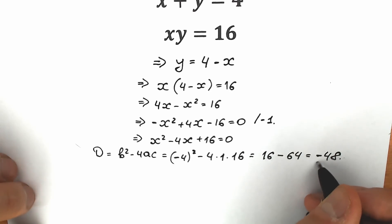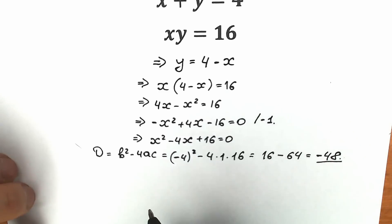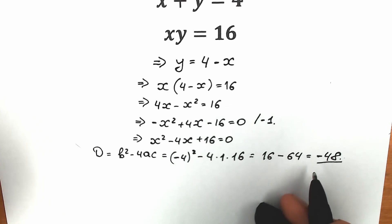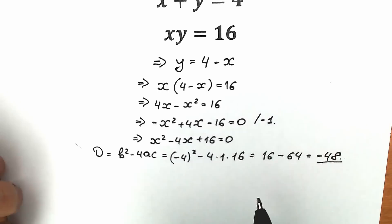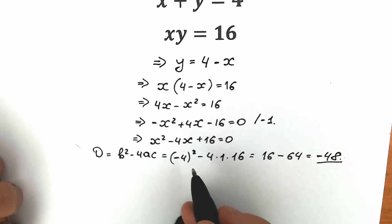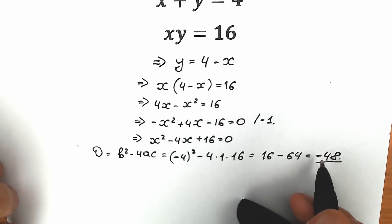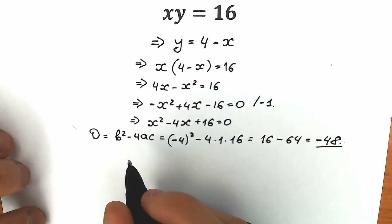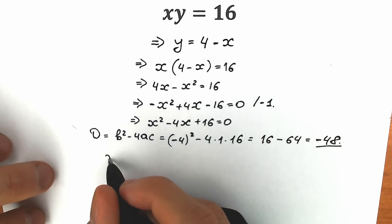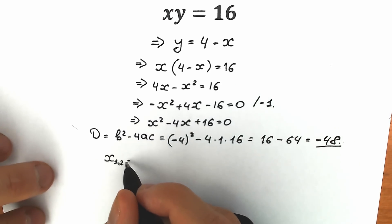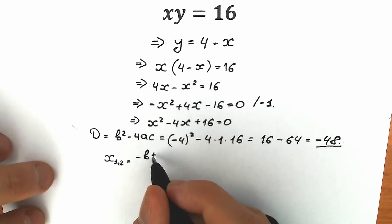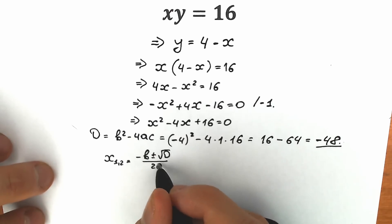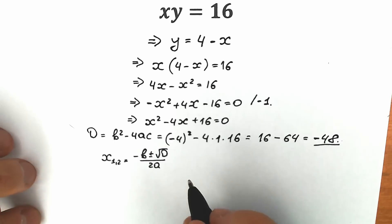So 16 minus 64 equals minus 48. This implies we have no real roots. A lot of students are confused about this — they say we don't have real number roots and that's it. But in terms of complex numbers, we can easily find two complex solutions.